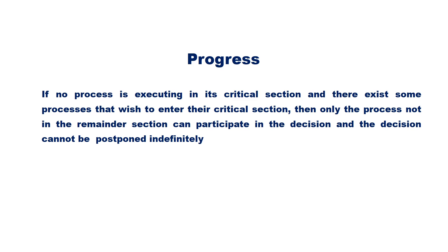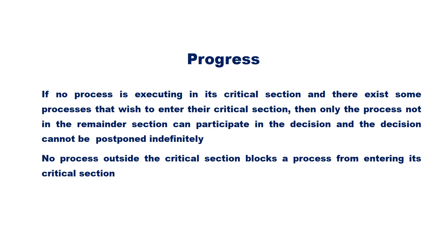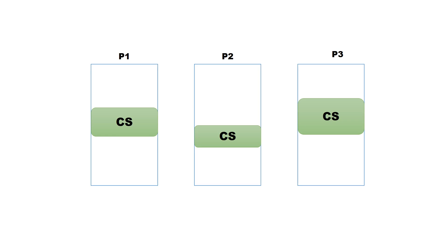Progress means if no process is executing in its critical section and there exist some processes that wish to enter their critical section, then only the processes not in the remainder section can participate in the decision, and this decision cannot be postponed indefinitely. That means no process outside the critical section should block a process from entering its critical section. Take three processes P1, P2, and P3. Assume no process is currently executing the critical section, and P1 and P3 wish to enter. P2 is executing in its non-critical section and should not be involved in the decision. Either P1 or P3 should be granted permission within a finite time. This is known as progress.